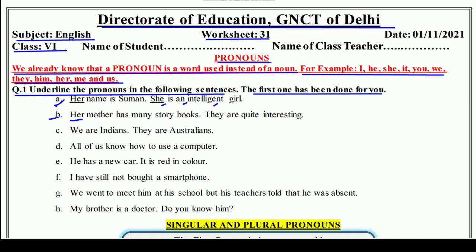Her mother has many story books — यानि उसकी मम्मी के पास बहुत सारी story books हैं। And 'they' — they are quite interesting — वे बहुत ही interesting कहानियाँ हैं। Third: We are Indians — हम भारतीय हैं — and they are Australians — वे Australians हैं।